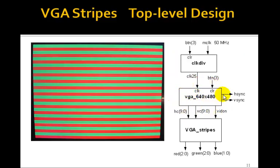And then the HC and VC output signals get set just to the horizontal and vertical counter signals. So that's this module, which generates H-sync and V-sync. And now we need to design this VGA stripes.